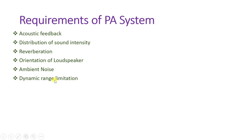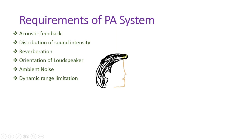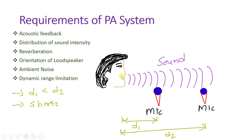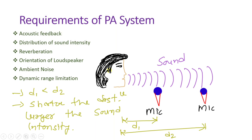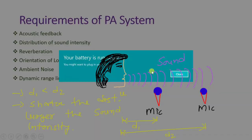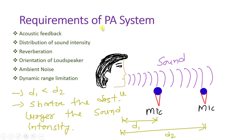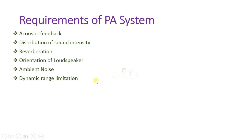Next is dynamic range limitation. The amplifier of a good public address system is equipped with a level limiter which keeps output level constant when the input level exceeds a threshold. For example, if a person speaks with the microphone close to their mouth the signal is strong; if they move away the signal is weaker. The PA system must both amplify and attenuate the signal as required using this level limiter.